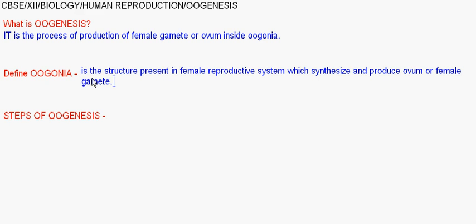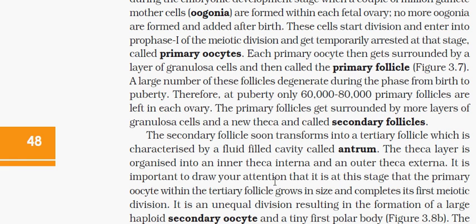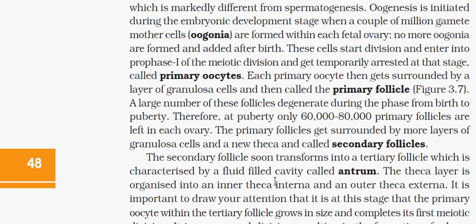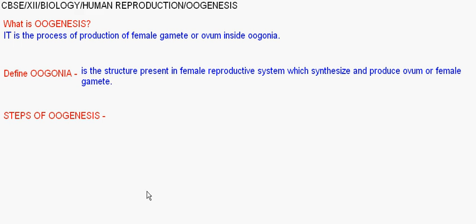As we know, in the case of male the gamete is called sperm, and in the case of female the gamete is known as ovum. The primary sex organ in case of female is the ovary — a pair of ovaries are present.